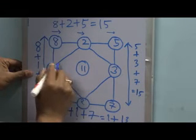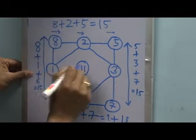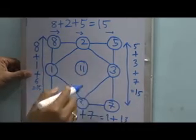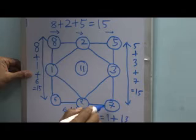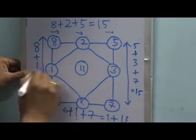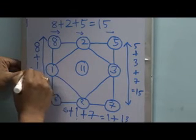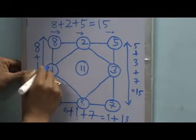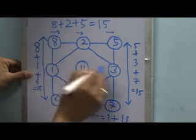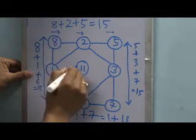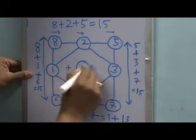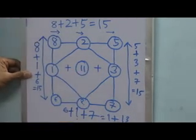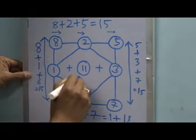Now we need to add the numbers in the middle section. If we dissect the big square from the middle, we get three numbers in the middle section: one is 1, another is 11, and the third one is 3. If we add these three numbers we get 15.